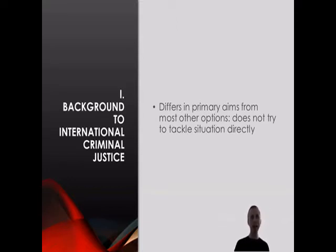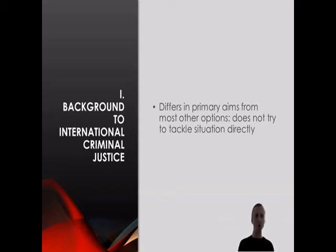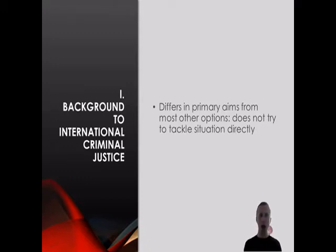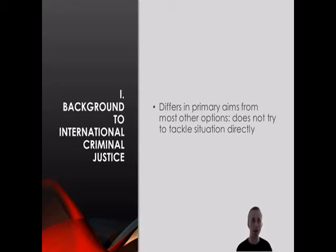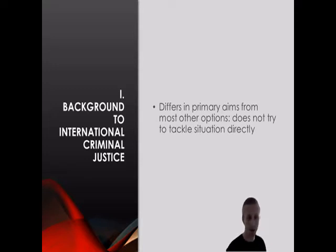Crucially, international criminal justice mechanisms aim to tackle mass atrocities and other forms of aggression only as a secondary intention. The main aim of international criminal prosecutions is to put those on trial who commit abuses and atrocities. It is post hoc rather than attempting to tackle atrocities directly that are ongoing. Most of the time the cases are after the event rather than tackling directly ongoing atrocities.